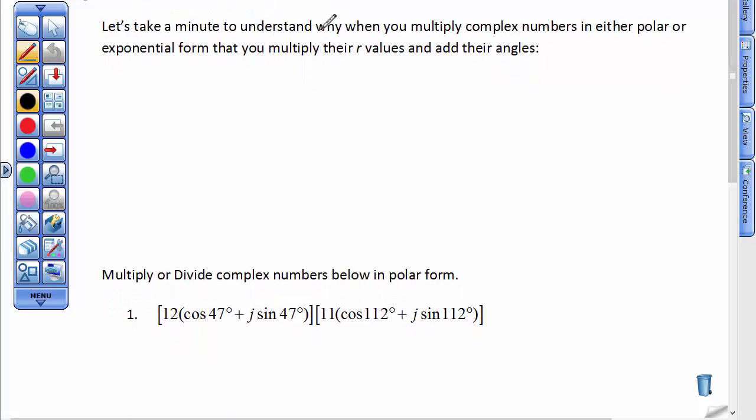Let's take a minute to understand why, when you multiply complex numbers in either polar or exponential form, that you will always multiply their r values and add their angles. We're going to go to just a plain old algebra problem. So when we take 3x² and multiply that by 5x⁴, we know that we multiply the 3 times the 5 and we get 15. And because the x's, the bases, are alike, we will add their exponents. 2 plus 4 is 6. And we're all done.